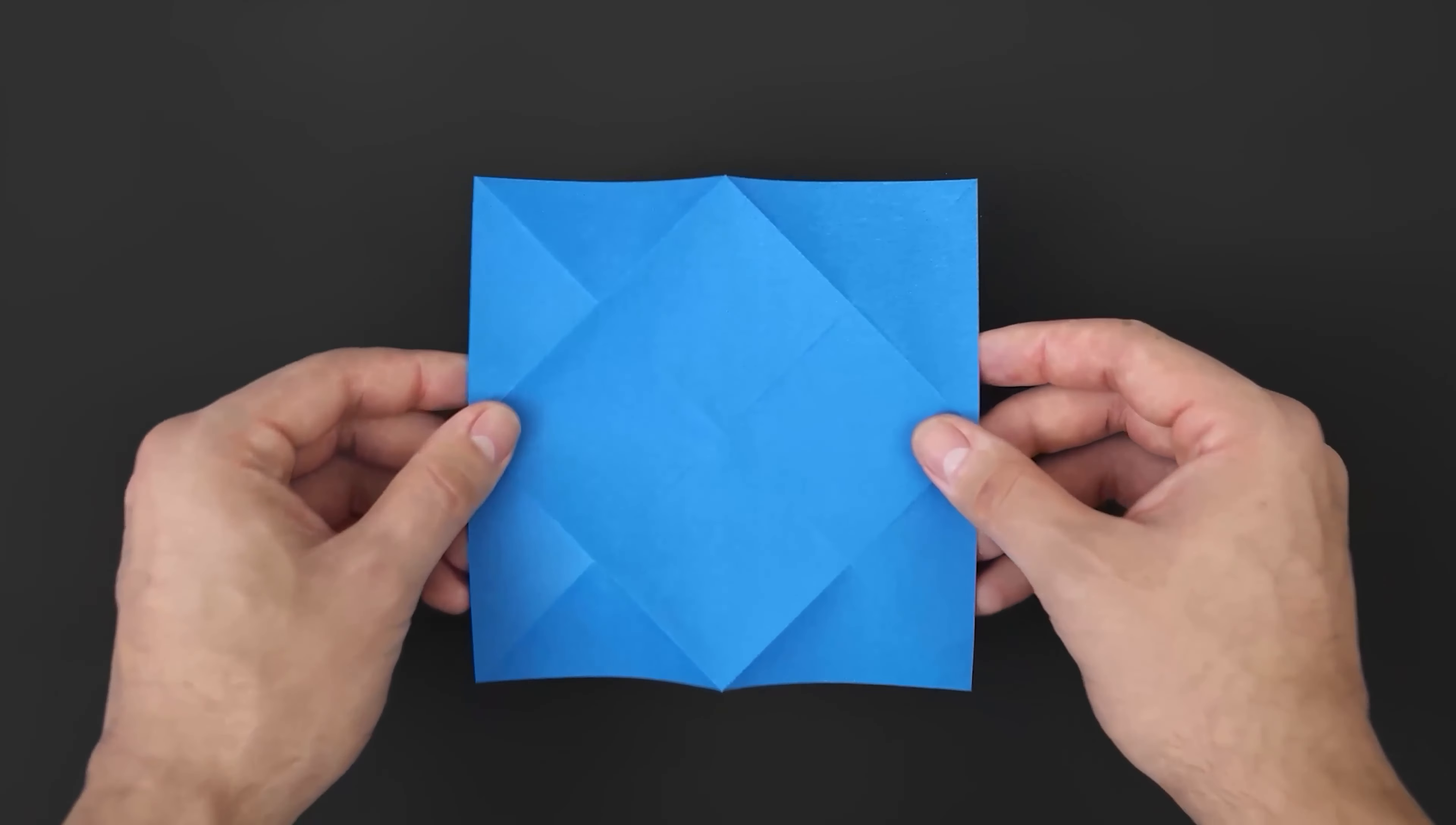Now pay close attention to the next step. We're going to lower this right corner, the one we just folded, and close this side using the existing line here. The middle of the paper is now a triangle.